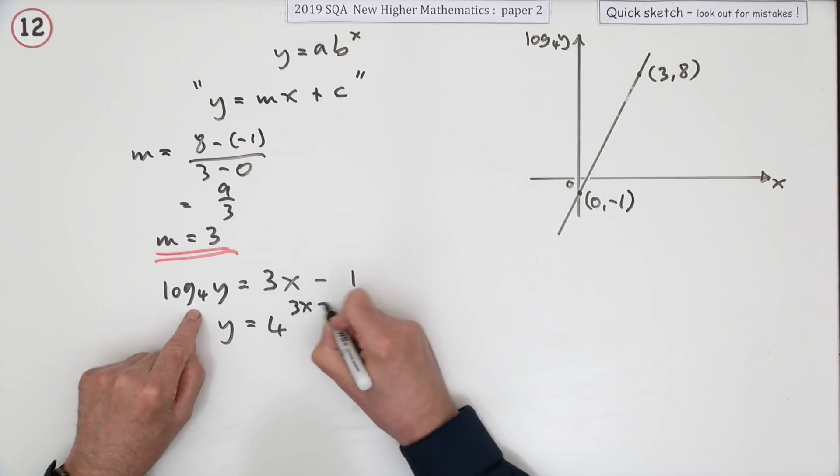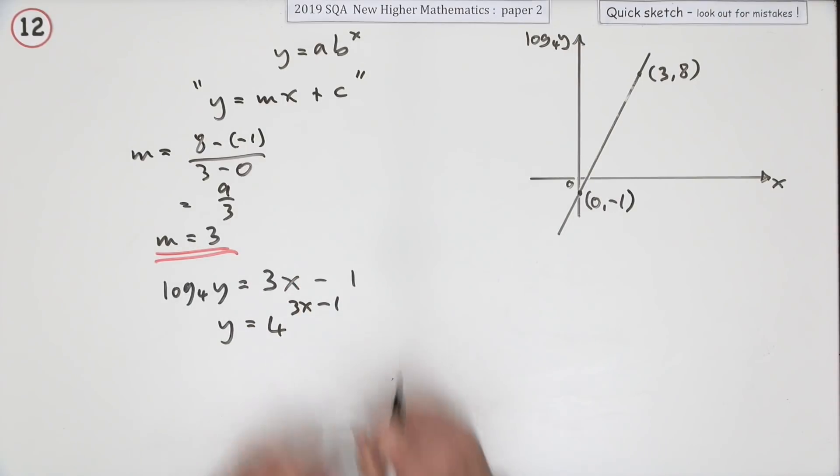Then I'm going to fiddle about with those powers. You might not like it, that's what I'm going to do. There may well be other ways. Now, one of the rules of indices is if you're adding or subtracting them, that involves multiplication or division. So that's the same as 4^(3x) × 4^(-1). We're almost there because 4^(-1) is just a number, that's just a quarter.